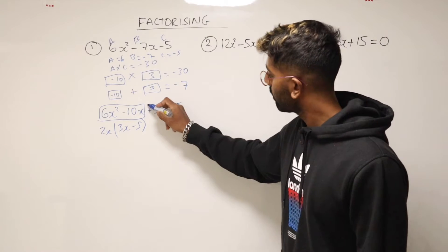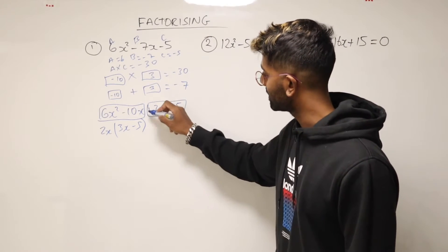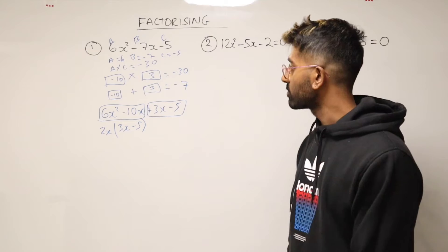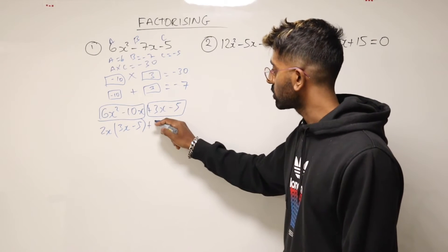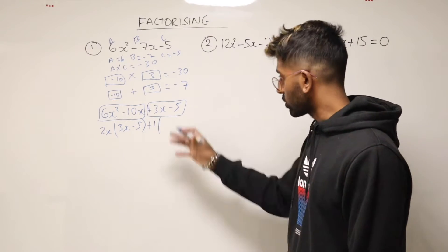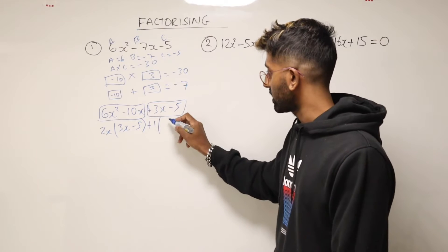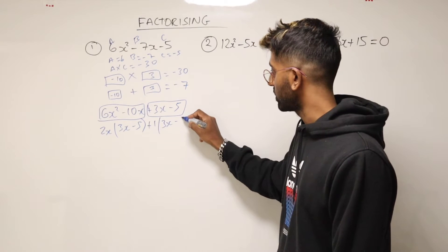And over here, for factorizing this, it doesn't look like there's much you can take out. So what we'll do is just write plus 1. Because if you take 1 out of there, this stays exactly the same. So 3x minus 5.